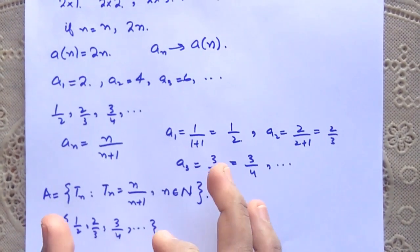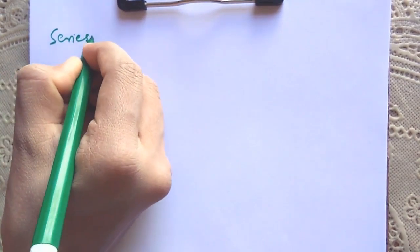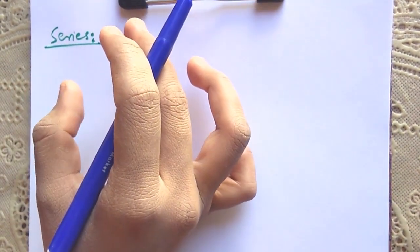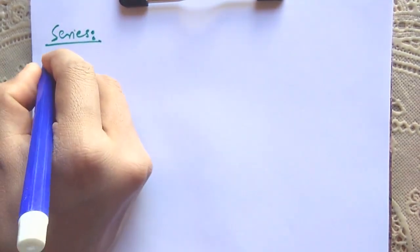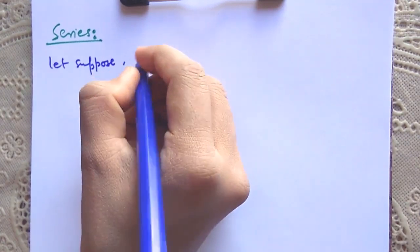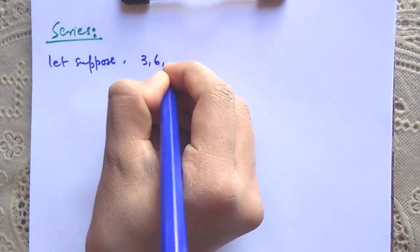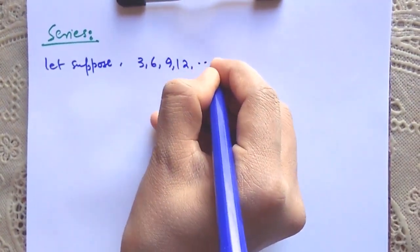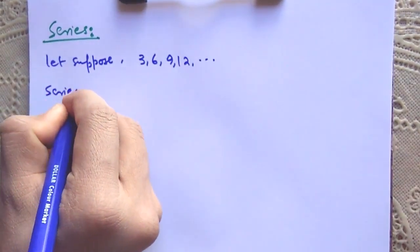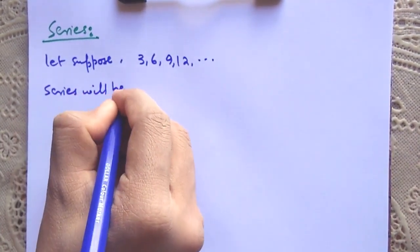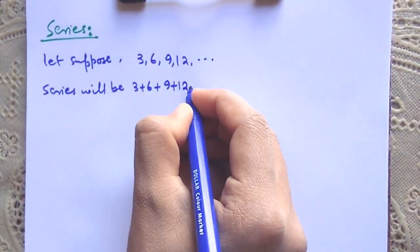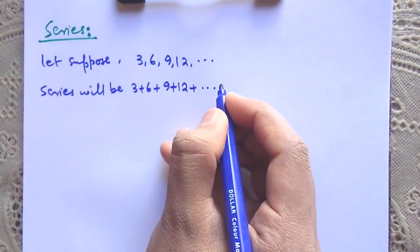Now let us define a series. A series is nothing but the sum of a sequence. For example, if we have the sequence 3, 6, 9, 12, and so on, then its series will be 3 plus 6 plus 9 plus 12, and so on.